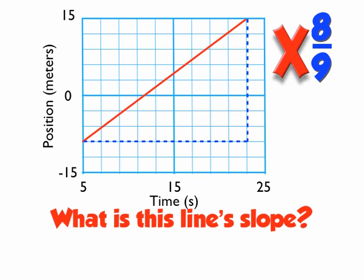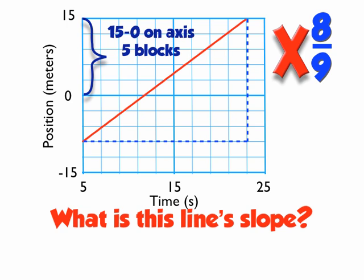To find the value for each block in the vertical direction, I'm going to pick a range. I'm going to pick 15 and 0 as my range — those two numbers are on the axis — and divide that by the number of blocks between 15 and 0. Counting the blocks between 0 and 15, there are 5 blocks. Therefore, each block has a value of 15 divided by 5, which is 3 — 3 units per block vertically.